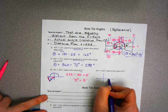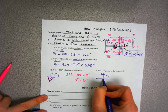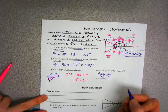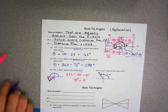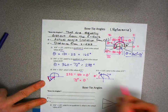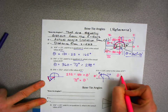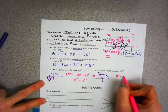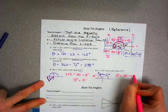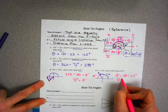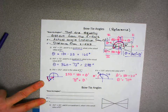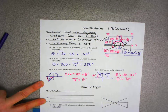Another example: theta is 110, which is in the second quadrant. To find theta prime, I use 180 minus 110, which gives a theta prime of 70 degrees. Those are reference angles and some of the ways we work with them.